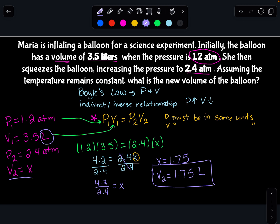Notice how because I increased the pressure on my P2, my volume got smaller, right? And that's why this is an indirect relationship. All right, see you next time for another gas law.